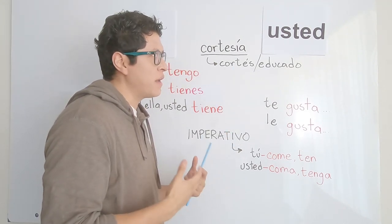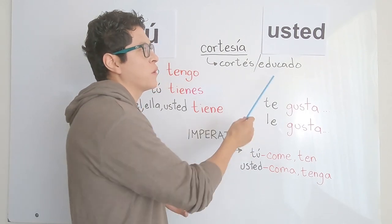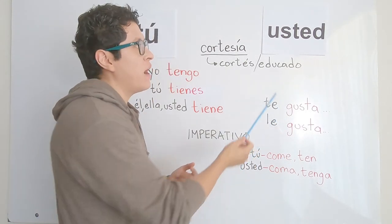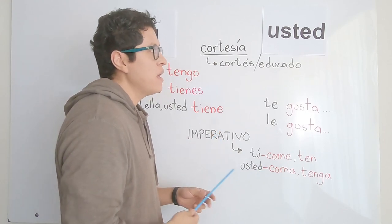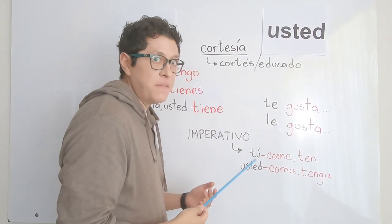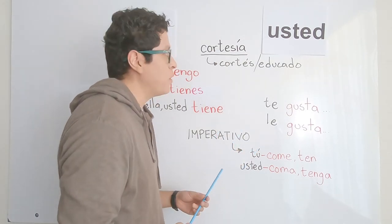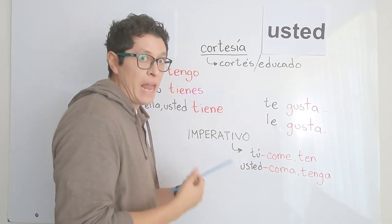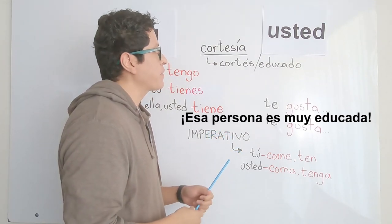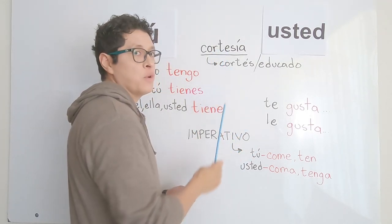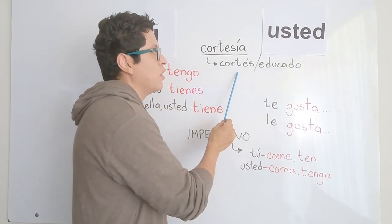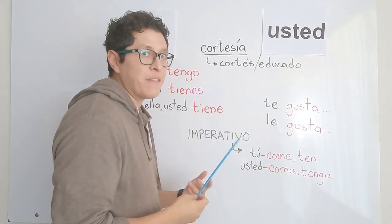People actually use the word educado instead. You might quickly think this is the word for 'educated,' but in Spanish educado, which is also an adjective — esta palabra también es un adjetivo — means someone who is very polite. For example, 'esa persona es muy educada.' So we have cortesía, which means politeness, and then cortés and educado, both of which can mean polite.